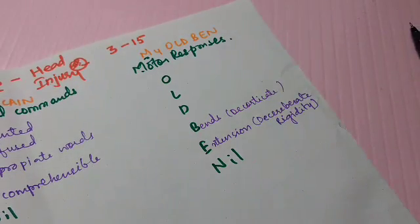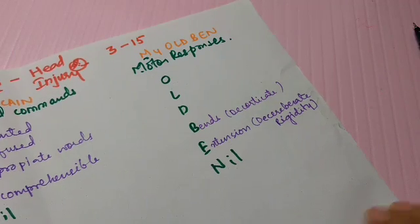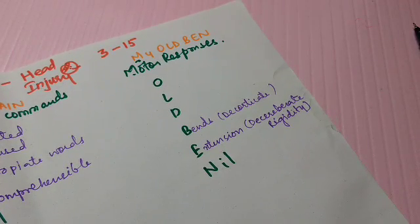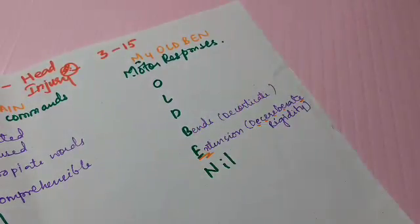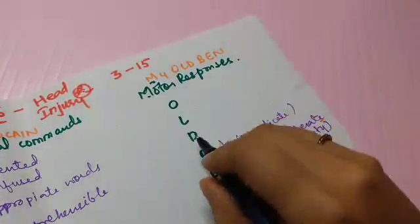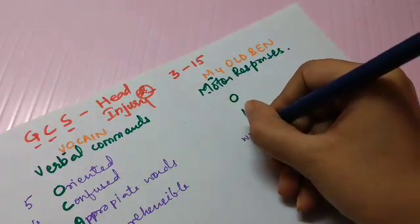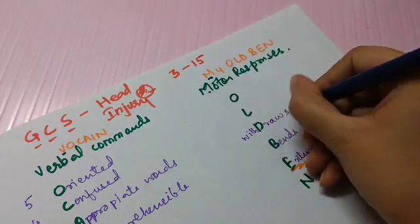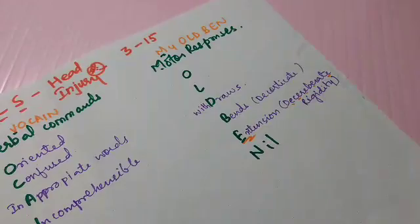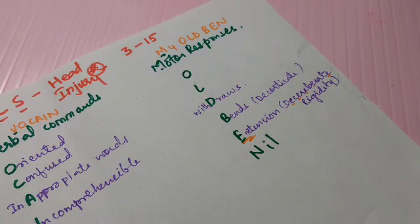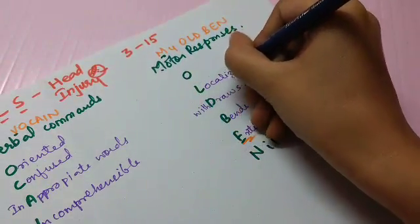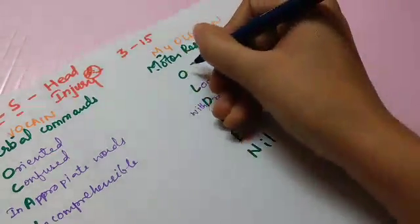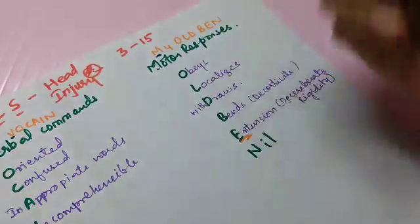To remember which one is extension and which one is flexion: decerebrate has enough E's to make you think of extension. D is for withdrawals — the patient withdraws when you try to elicit a motor response. L is for localizes pain. And O is for obeys commands — the patient obeys all your motor commands.